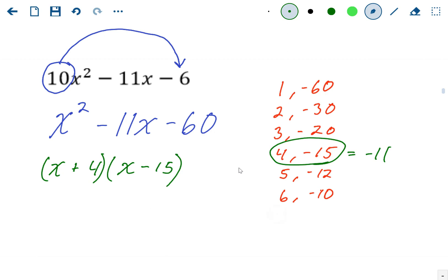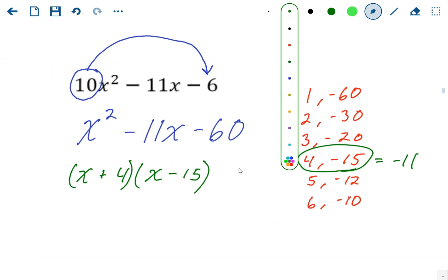Now those are the factors of our rewritten problem, but not the factors of the original problem. The original problem, we multiply by 10 in the first step. So if we do something, we have to undo it at some point. That's where the swing, you swing forward, you swing back. So we have to undo this multiplication by dividing each of these factors by 10.